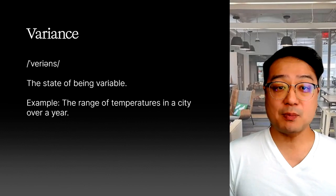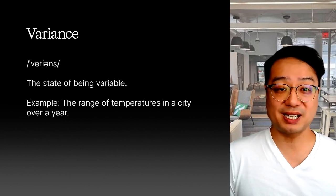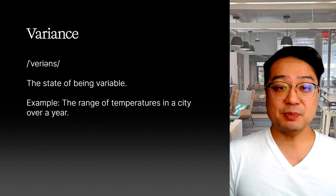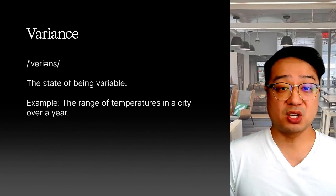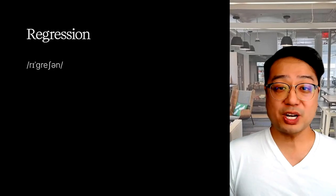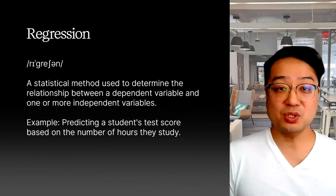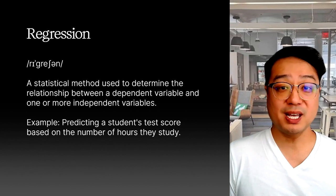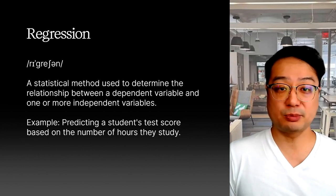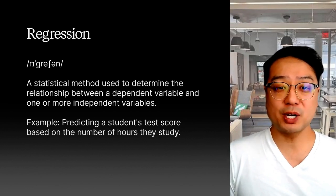Variance refers to how much the model's predictions change when using different datasets — like asking different people for their opinion on the same topic. If their opinions vary widely, there's high variance. Regression is a statistical method used to determine the relationship between a dependent variable and one or more independent variables. It's like trying to predict how much it will rain based on the number of clouds in the sky.